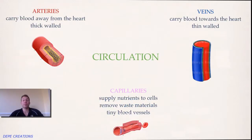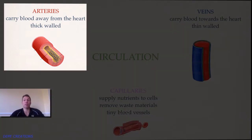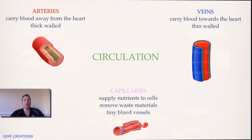The carriers for our blood are our blood vessels, and we're concentrating on the arteries, veins, and capillaries. They all have slight differences because of the role they play and where that role is. Arteries have thicker walls because the blood is under the most pressure when arteries carry it away from the heart.